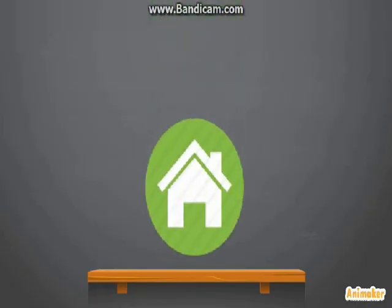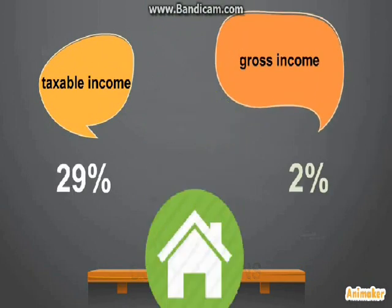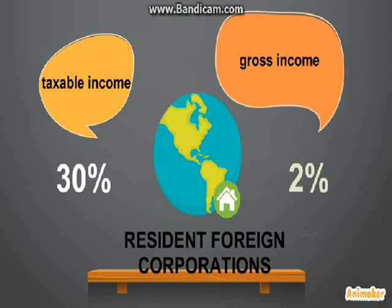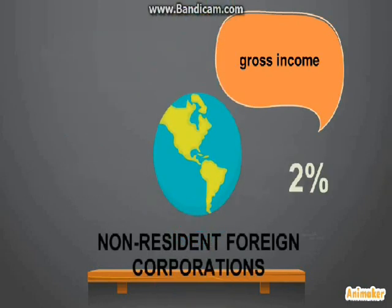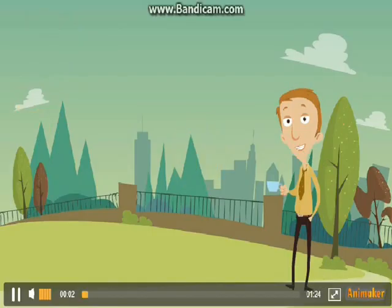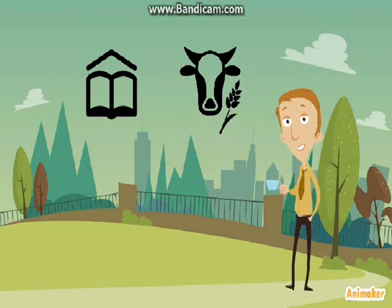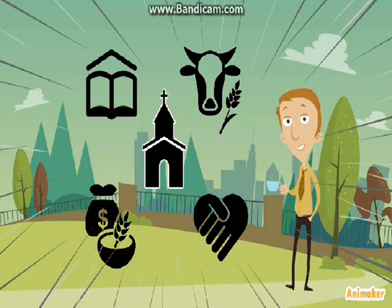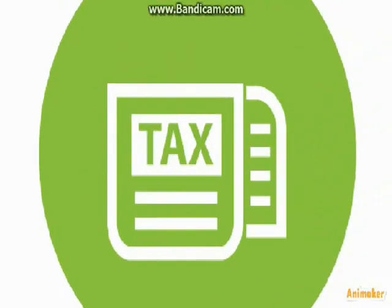Domestic corporations are taxed 30% on taxable income and 2% on gross income. The same rate applies for resident foreign corporations, and only 2% on taxable gross income for non-residents. Some corporations — like government educational institutions, non-profit labor or agricultural organizations, religious corporations, associations of farmers, and charitable organizations — are exempted from tax.